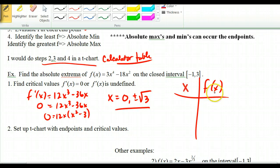x, f of x. When we set this up, so we set up x, f of x, and then I'm going to put my lowest value and my highest value. Those are my endpoints. And then in between I can put my critical values. So I have 0 and I have square root of 3.